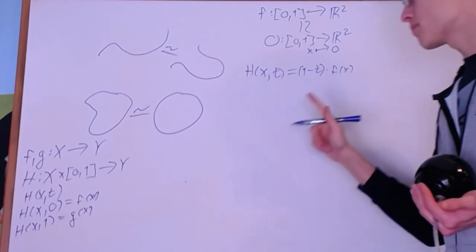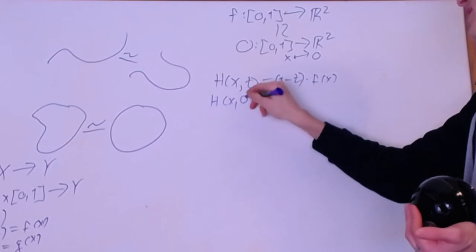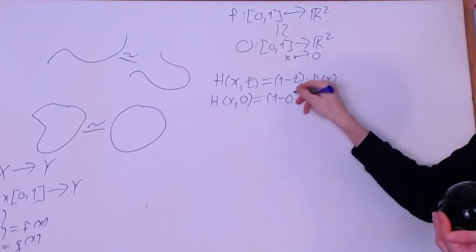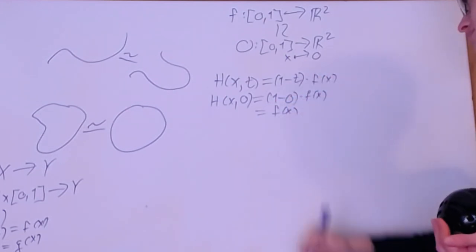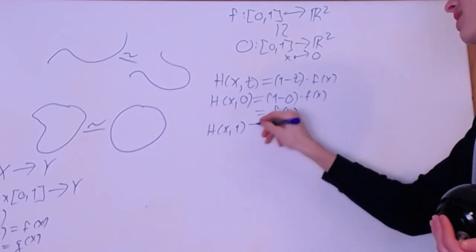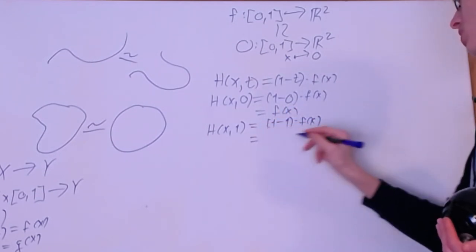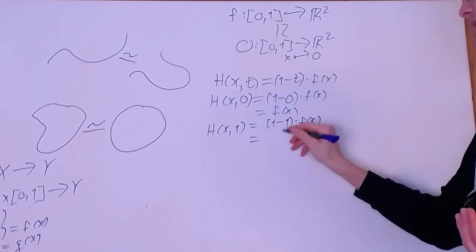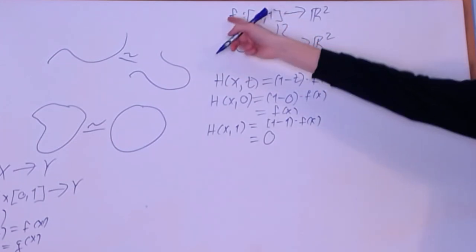Now let's prove that it satisfies the definition. If I do H(x, 0), this equals (1 − 0)·f(x), which is f(x). And H(x, 1) equals (1 − 1)·f(x), which equals zero·f(x) = 0. So as you can see, we started off with f(x) and ended up with zero. This is a homotopy from f to the zero map.